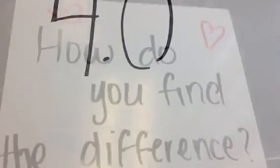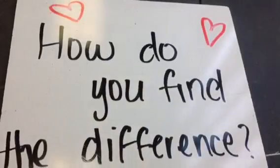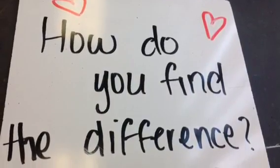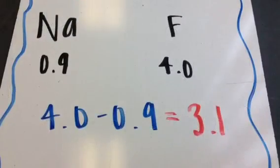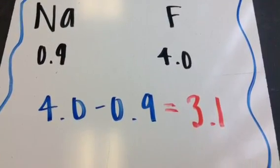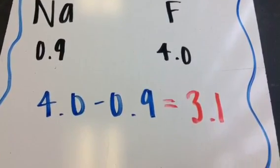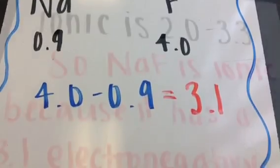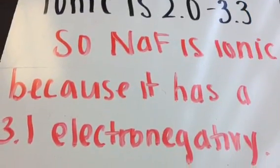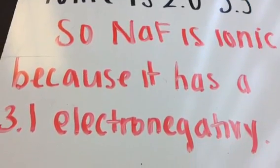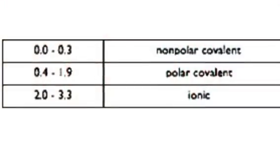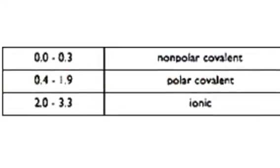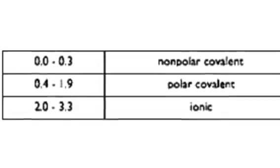Now we have to find the difference. To find the difference, you have to subtract 4.0 and 0.9 and you get 3.1. So it is ionic, and we can check this on the chart which shows that it is ionic.